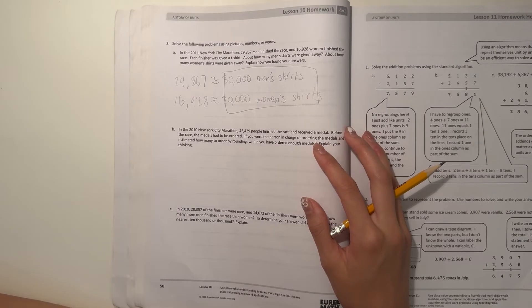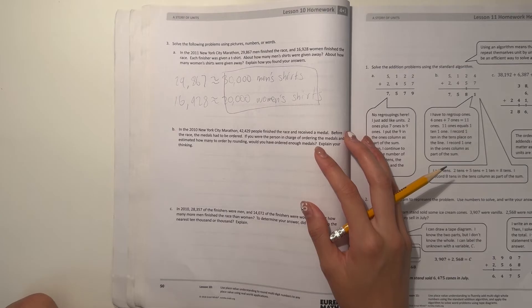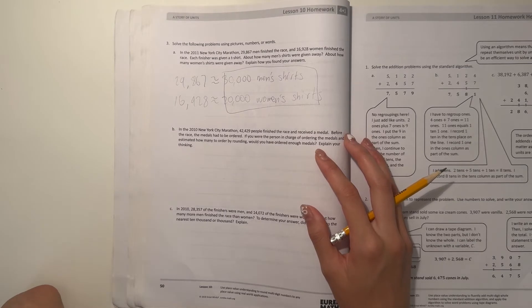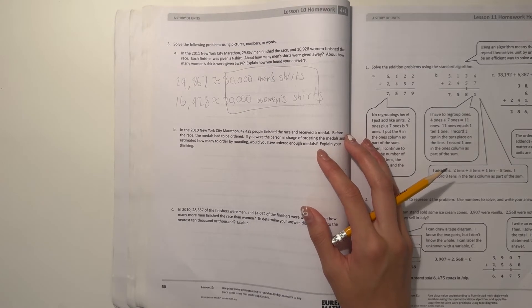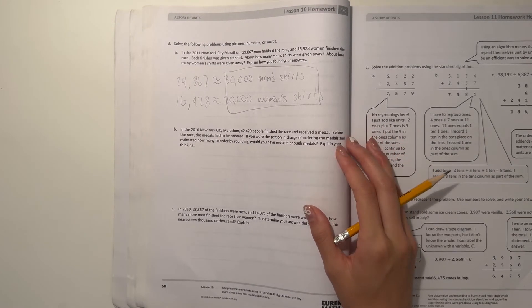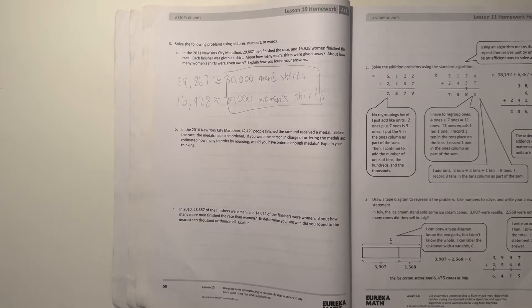And B, in the 2010 New York City Marathon 42,429 people finished the race and received a medal. Before the race the medals had to be ordered. If you were the person in charge of ordering the medals and estimated how many to order by rounding, would you have ordered enough medals? Explain your thinking.